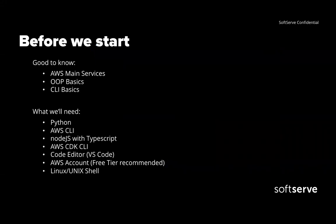Before we start, it's good to know the main AWS services like Lambda, S3, Route53, and API Gateway. It's good to know object-oriented programming basics — for this presentation I'll use TypeScript because it'll be understandable for anyone who programs in an OO language. It's also good to know CLI basics and the Unix terminal because we'll need to use some commands.